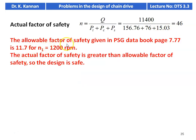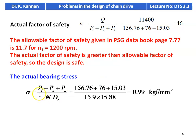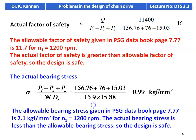The allowable factor of safety from the PSG data book page 7.77 is 11.7 for pinion speed 1200 RPM. The actual factor of safety is 46, which is greater than the allowable factor of safety, so the design is safe. Actual bearing stress: σ = (Pt + Pc + Ps) / (W × Dr) = (156.76 + 76 + 15.03) / (15.9 × 15.88) = 0.99 kgf/mm². The allowable bearing stress from page 7.77 is 2.1 kgf/mm² for N1 = 1200 RPM. Actual bearing stress is less than allowable, so the design is safe.